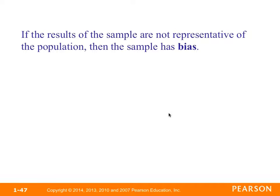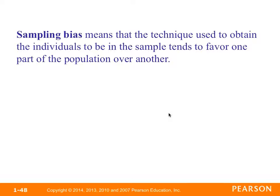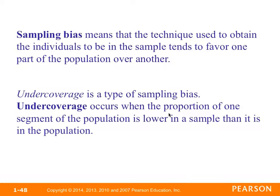Section 1.5 talks about bias in sampling. If the results of the sample are not representative of the population, then the sample has bias. There are three main sources of bias: sampling bias, non-response bias, and response bias. Sampling bias means the techniques used to select individuals tend to favor one part of the population over another. Under-coverage is a typical type of sampling bias — it occurs when the proportion of one segment in the population is lower in the sample than in the population. For example, if a university survey hasn't sampled enough freshmen, it's not getting a true look at how all individuals in the school see a certain issue.